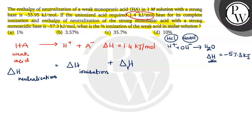So, now substitute delta H neutralization of weak acid and strong base. Given here in the question is -55.95. This is delta H neutralization of weak acid with strong base. So,